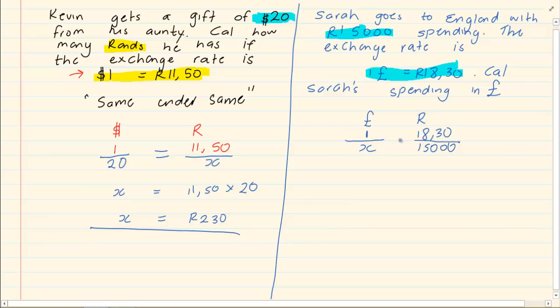So we have our equal to sign and again we have a fraction which is cross multiply. So we are going to have one times fifteen thousand is equal to x times eighteen rand thirty, which is eighteen comma three x. How do I get my x alone? It's basic solve for x.